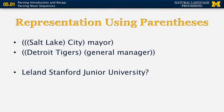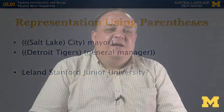In 'Detroit Tigers general manager,' we first group 'Detroit' and 'Tigers,' then 'general' and 'manager,' and finally combine the two pairs. For 'Leland Stanford Junior University' — the official title of a university on the West Coast — there are two possible interpretations: one is pretty obvious but wrong, and the second is less obvious but correct. The correct interpretation is that Leland Stanford Junior is the son of Leland Stanford Senior, and the university is named after him.